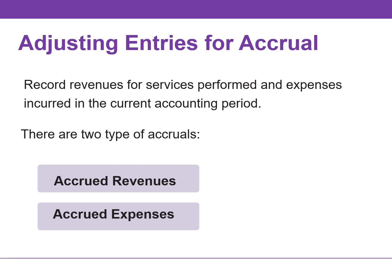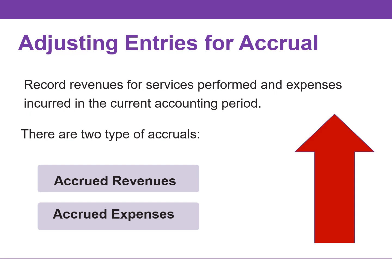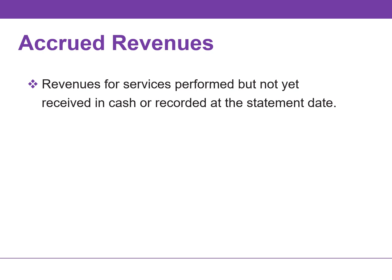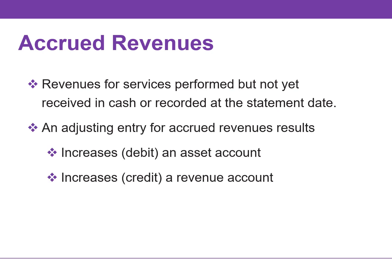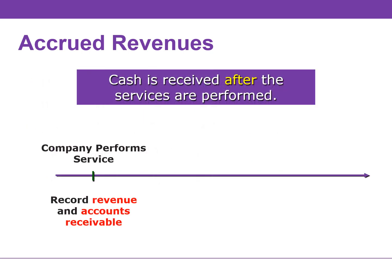The adjusting entry for accruals will always increase both a balance sheet and an income statement account. Revenues for services performed but not yet received in cash or recorded at the statement date are accrued revenues. An adjusting entry for accrued revenues will result in an increase or a debit to an asset account and an increase or a credit to a revenue account. If a business provided services but has not received payment, the company records an asset called accounts receivable.